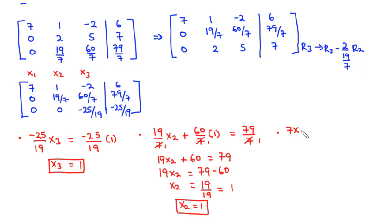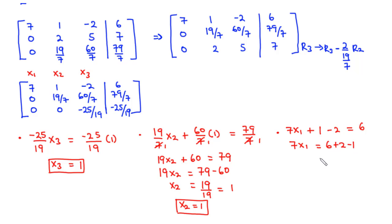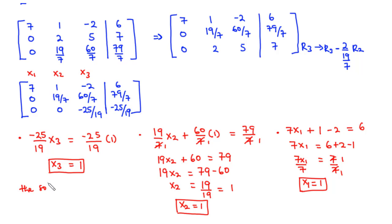Moving to row one with x2 = 1 and x3 = 1: 7·x1 + 1·(1) − 2·(1) = 6, which gives 7·x1 + 1 − 2 = 6, so 7·x1 = 6 + 2 − 1 = 7. Dividing by 7, we get x1 = 1. Therefore the solution vector x = [1, 1, 1]ᵀ — that is, x1 = 1, x2 = 1, and x3 = 1.